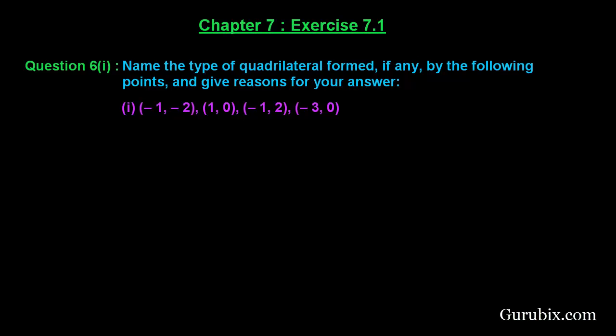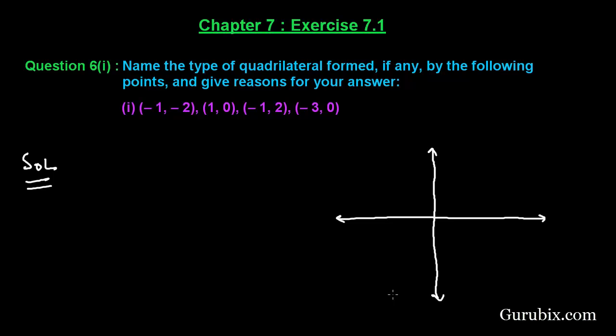Welcome friends. Let us solve the first part of question number 6 of exercise 7.1 of chapter 7. The question says: name the type of quadrilateral formed, if any, by the following points, and give reasons for your answer. We have four points and we have to find the name of the quadrilateral formed by these points. First of all, we shall draw a rough sketch of the coordinate system.